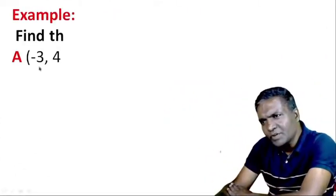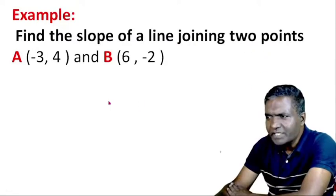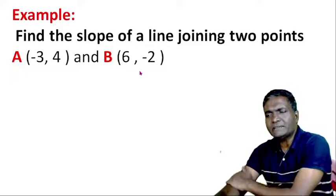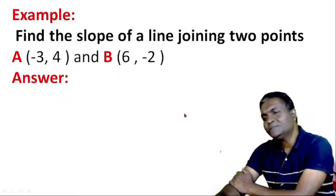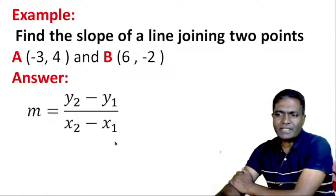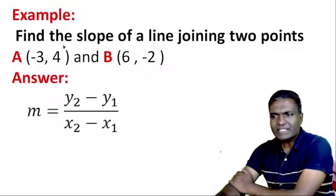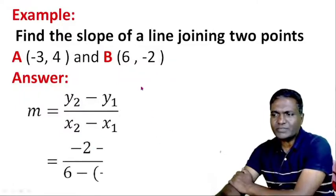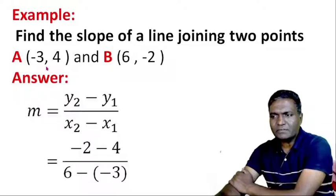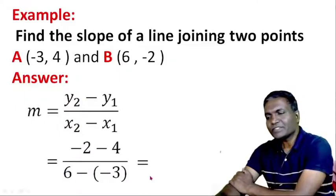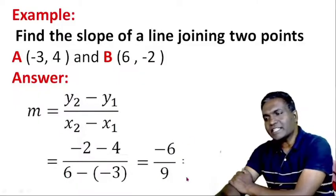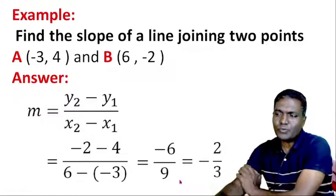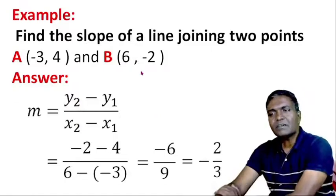Another example: find the slope of a line joining two points A(-3, 4) and B(6, -2). Pause the video and try it. The answer: m = (y2 - y1) / (x2 - x1) = (-2 - 4) / (6 - (-3)) = -6 / 9. Simplifying, 3 divides both: we get -2/3. So -2/3 is the slope of the line joining A and B.